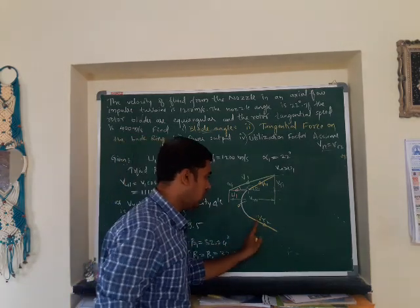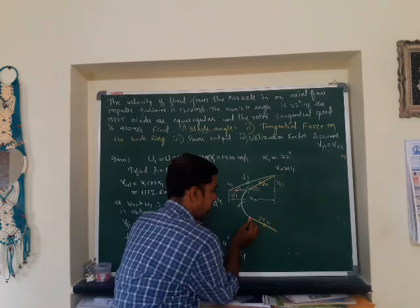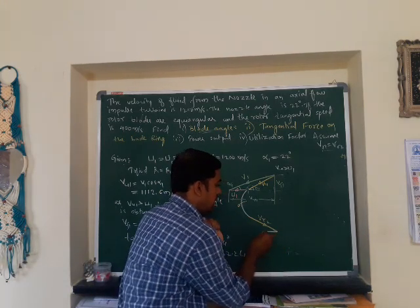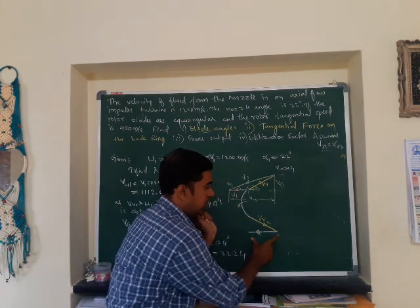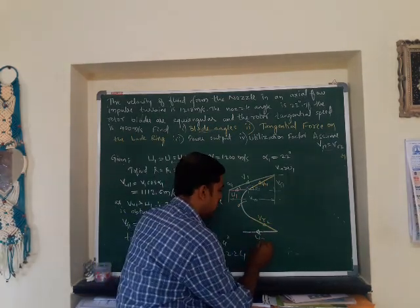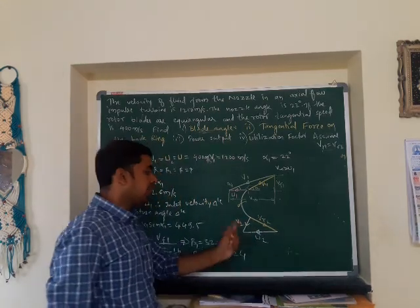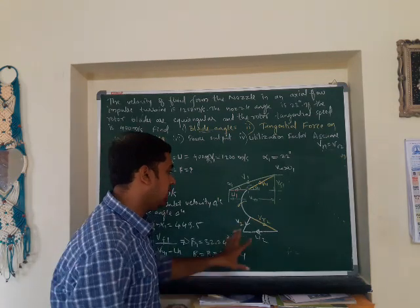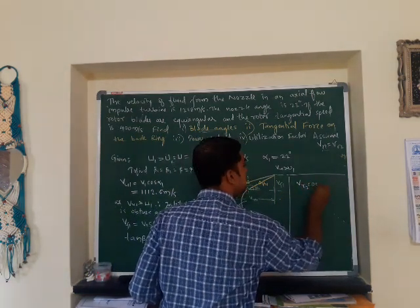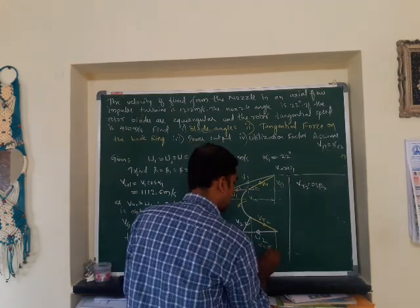At the exit, we draw VF2 in the direction tangential to the rotor. U2 is again directed from right to left. The resultant of VF2 and U2 gives the absolute velocity V2. To determine the outlet triangle type, we calculate VR2 times cos(beta2) and compare it with U2. If VR2 cos(beta2) is less than U2, we get an acute-angle triangle; if greater, an obtuse-angle triangle.